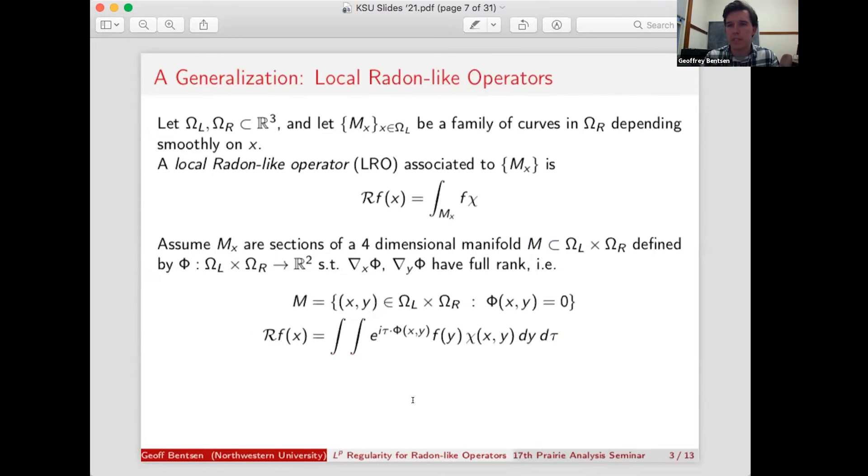But we can be a little bit more specific by what we mean by depending smoothly on x. Doing a little bit of work, we can assume that these Mx are actually sections of a manifold M living inside the product space of these domains. And further, by some change of variables, we can assume locally at least that this M is the zero set of a smooth vector-valued function phi, such that the gradients of phi in x and in y both have full rank as matrices.